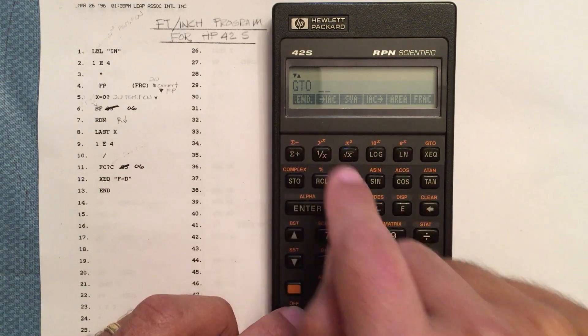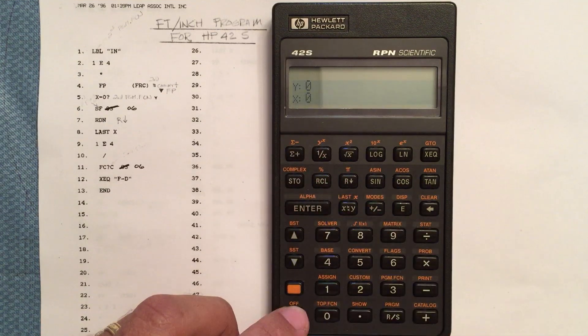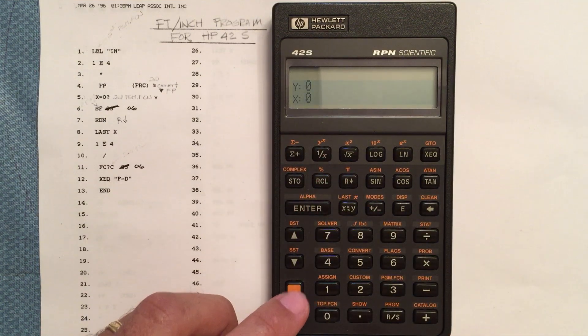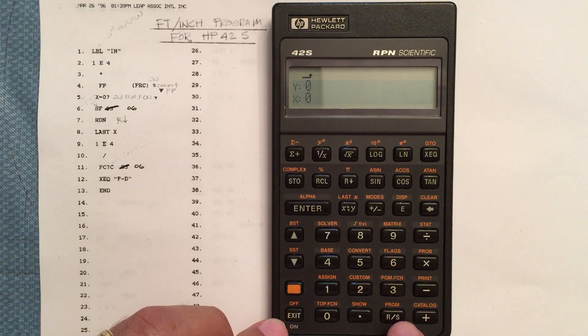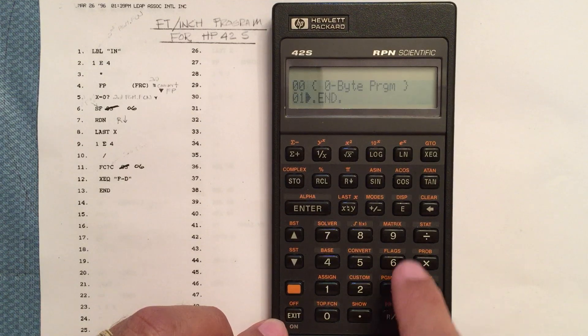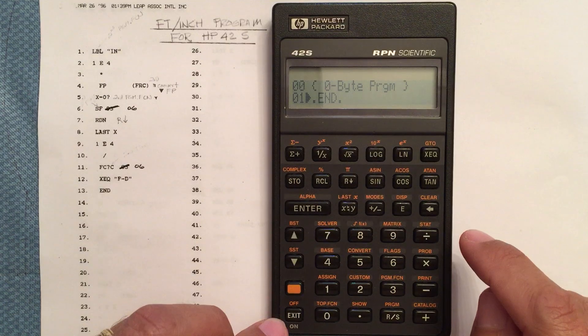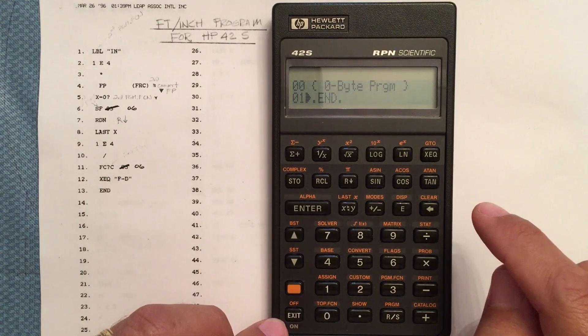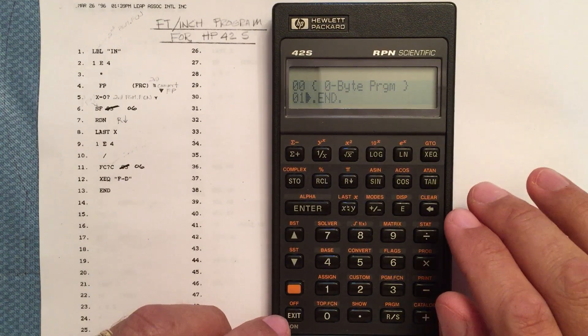You don't have to select that. It's already selected, but you can select it if you want. Then hit the shift key and go to program. So this enters our program space right here. It's a zero byte program, and all that's in there is just the default end.